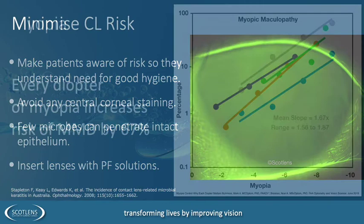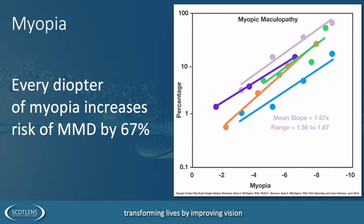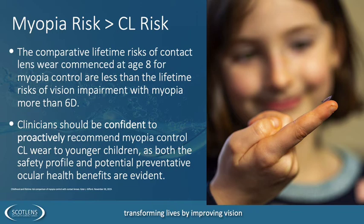Every dioptre of myopia we don't prevent will increase the risk of myopic macular degeneration. When we weigh up the risk — from Kate Gifford's data — the risk of contact lens wear from an eight-year-old starting a myopia control device is less than the risk of becoming high myopic and going over minus six. As clinicians, we should be confident to proactively recommend myopia control contact lens wear to younger children.